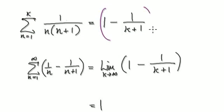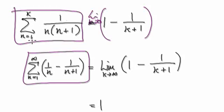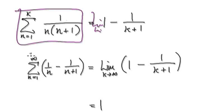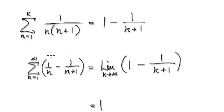So now if you take the limit of this as k tends to infinity, this whole thing here will then become this. We are no longer summing from 1 to k — we are now summing from 1 to infinity. So when you take the limit as k tends to infinity, this thing here will then become this.